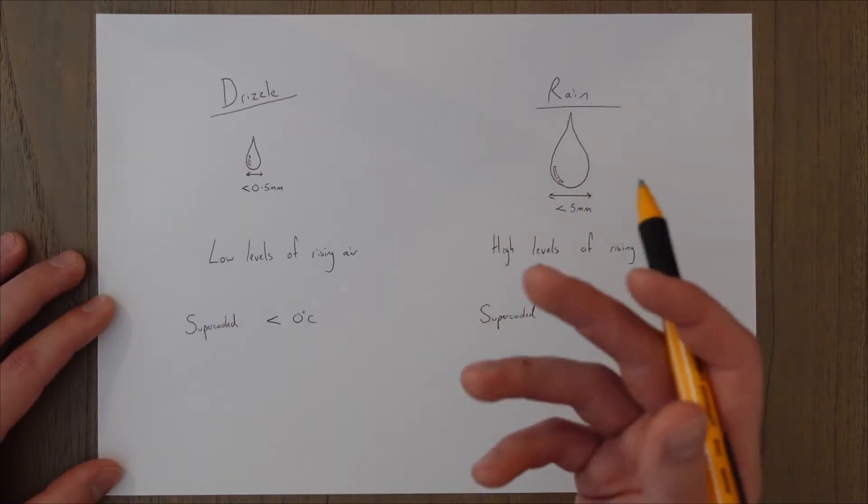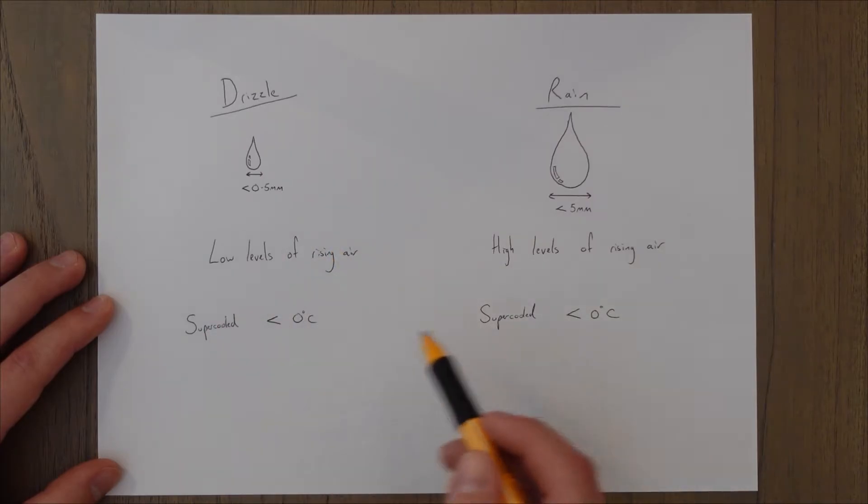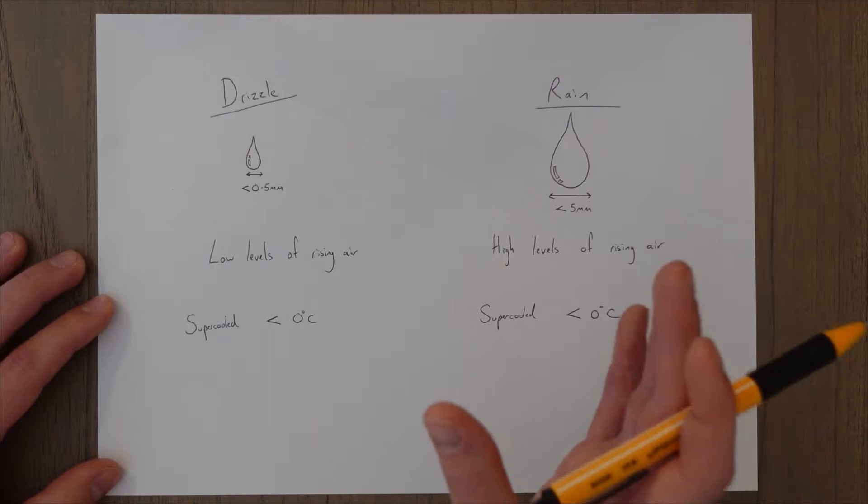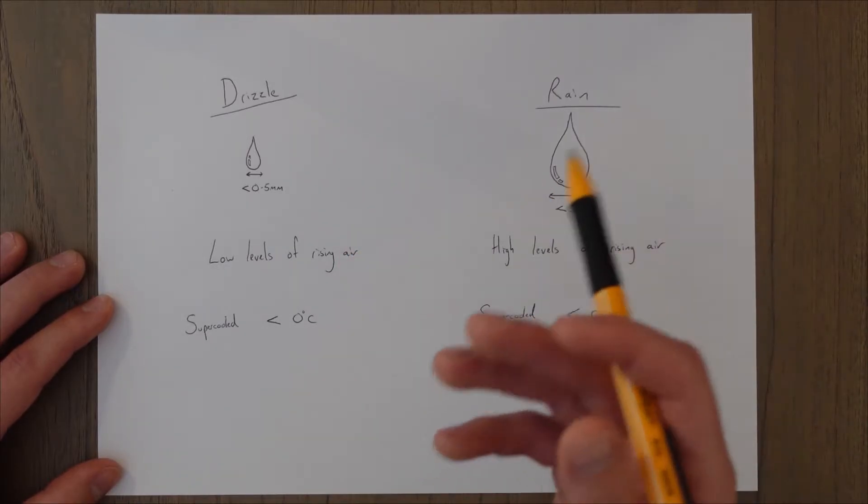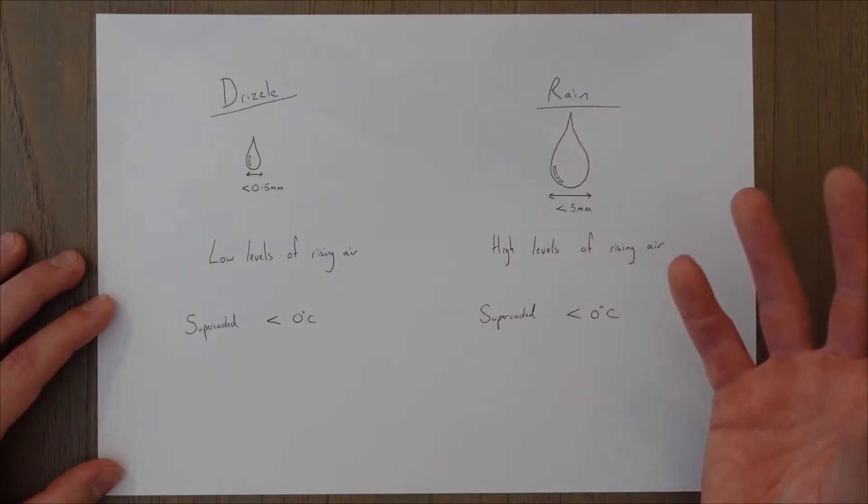This happens because normally ice crystals form around impurities in the air like dust particles. If the air is very pure with very few impurities then the supercooled droplets can form and then when these droplets come into contact with an impurity such as an aircraft then they will form into ice crystals and we need to think about anti-icing the aircraft.